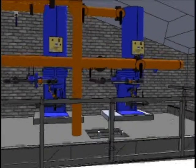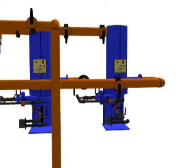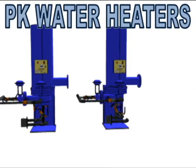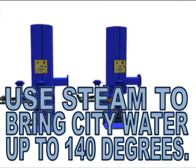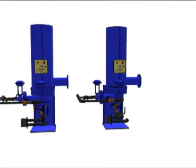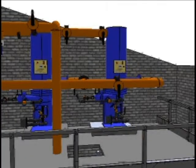Up above are the PK heaters which use steam to bring city water up to 140 degrees. The heated water is sent to the hot water tank and then on to production.